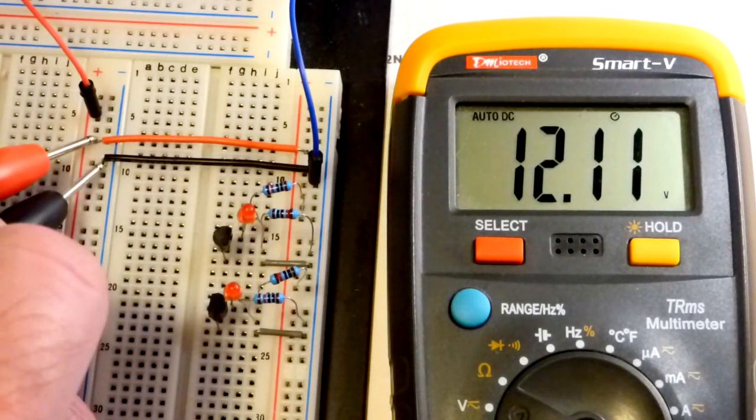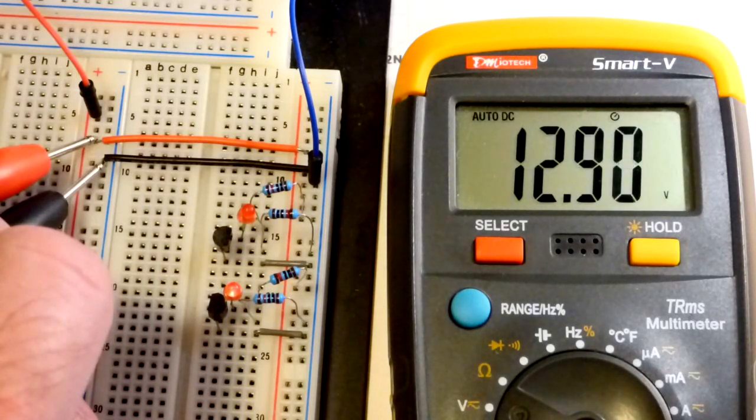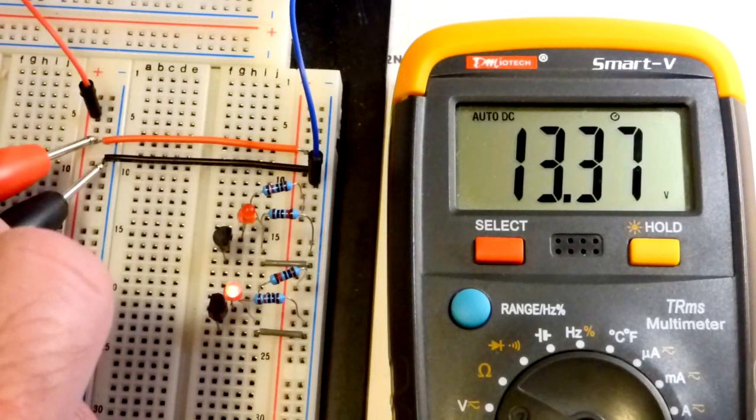And at about 12 volts, the LED starts glowing. You probably can't see it on camera until you get to about 13 right there. And so it's really glowing quite a bit. So it's passing current.